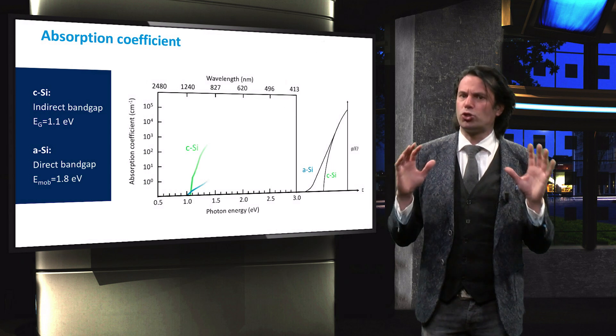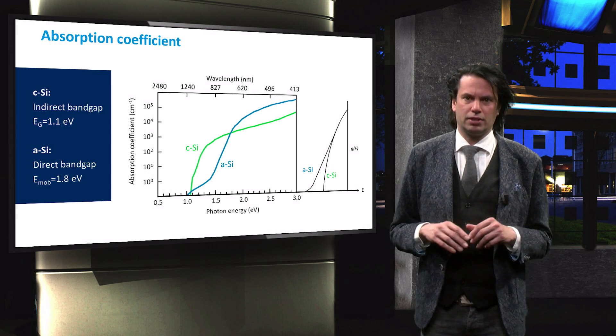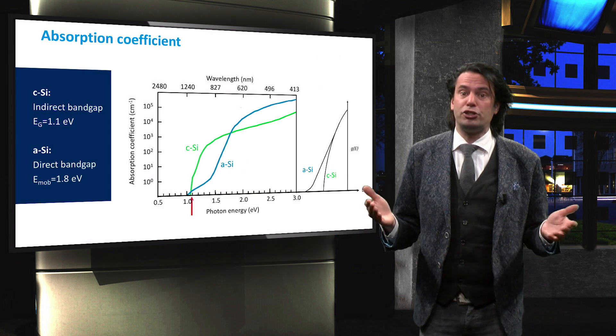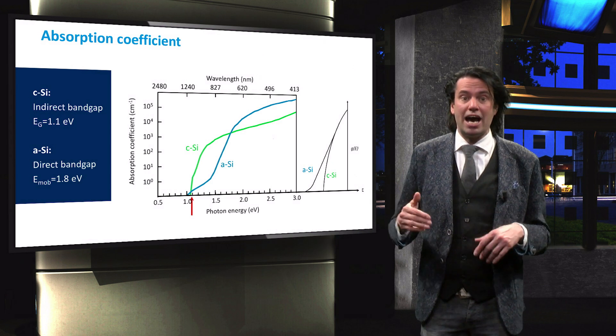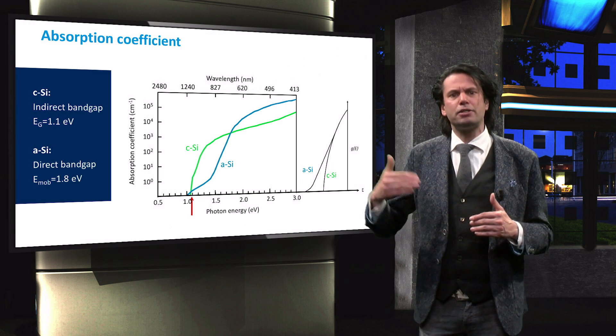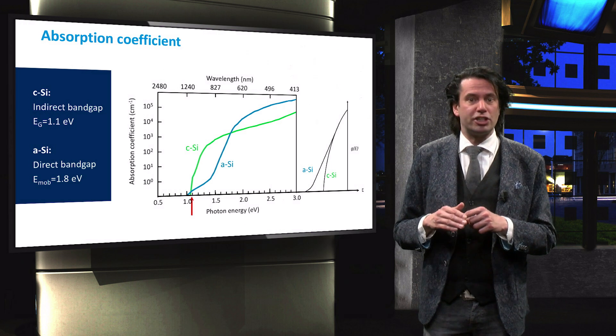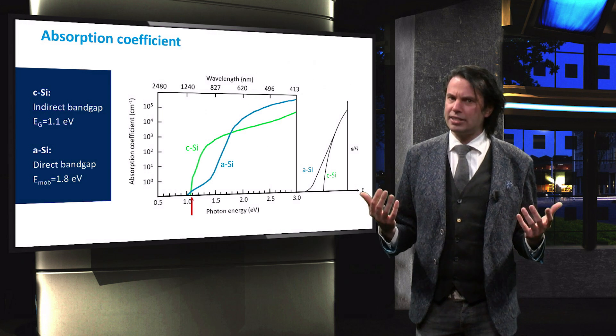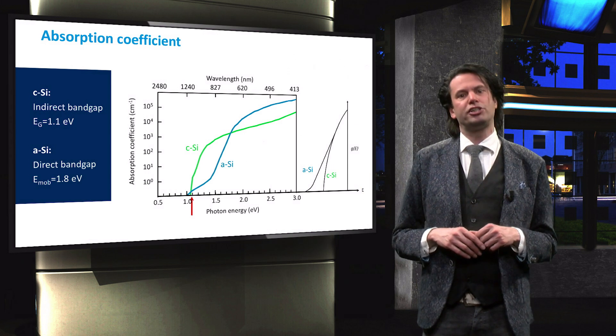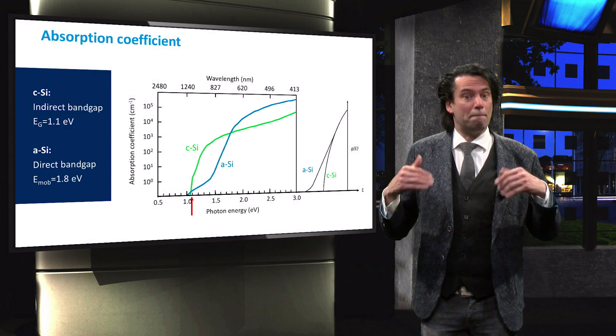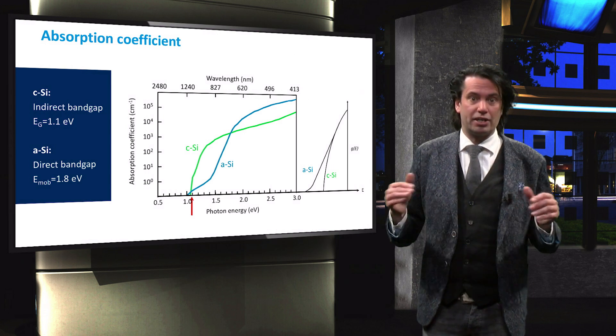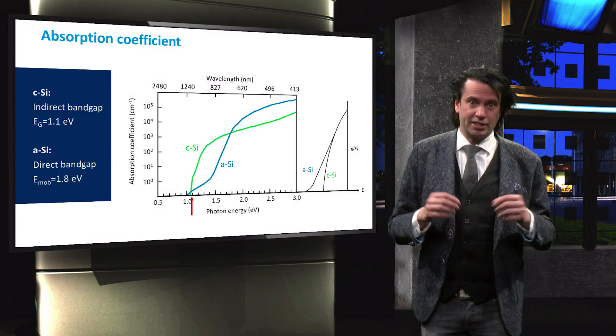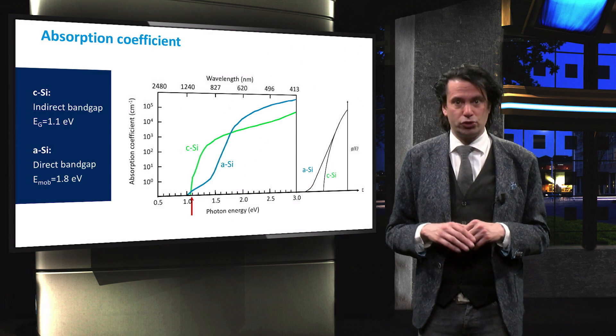We now plot the absorption curves for crystalline and amorphous silicon. Crystalline silicon starts absorbing from its band gap energy of 1.1 eV and initially, just like the density of state, near the band gap the absorption increases exponentially from this point. This can be understood by realizing that the low density of energy states near the band edges means that photons with an energy level just above the band gap energy have a low probability of exciting an electron from the valence to the conduction band.